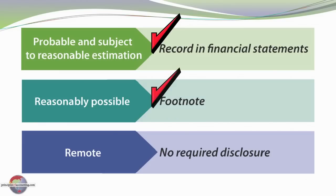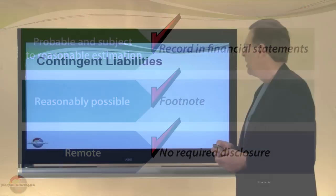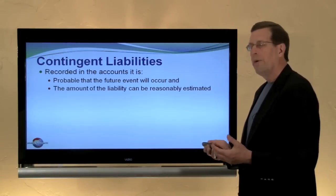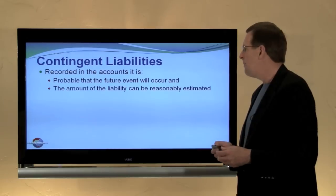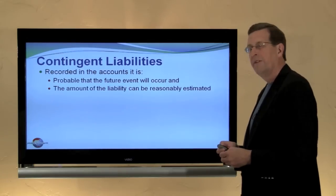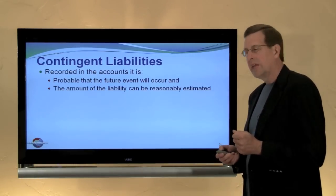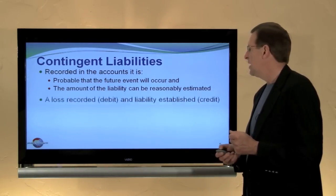However, if it's only reasonably possible that we'll have an unfavorable outcome, we generally only footnote the existence of the contingency. For contingencies where an unfavorable outcome is viewed as being remote, no disclosure is required. We record a contingent liability in the accounts if it is probable that the future event will occur and the amount can be reasonably estimated.